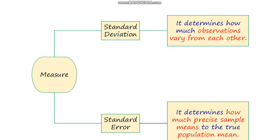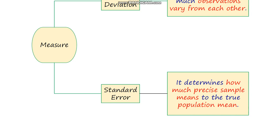With the help of standard deviation, we determine how much observations vary from each other. In standard error, we determine how precisely the sample means estimate the true population mean.